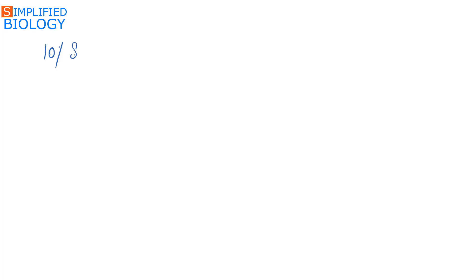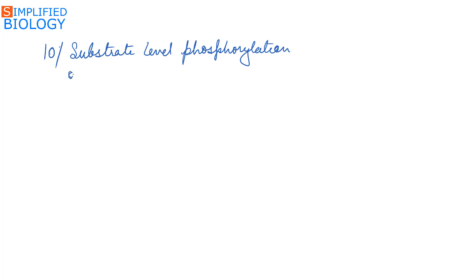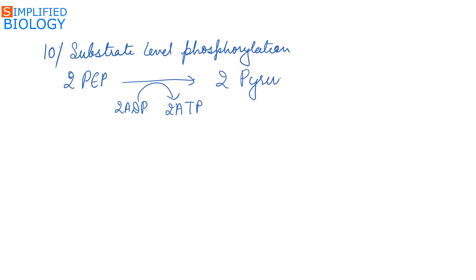The last step of glycolysis is again substrate level phosphorylation, meaning ATP is produced. Phosphoenol pyruvate is a high energy compound which reacts with ADP to form ATP and is itself converted into two molecules of pyruvate. As ATP is being formed, the enzyme is named kinase — so the enzyme is phosphoenol pyruvate kinase, also known as pyruvate kinase.